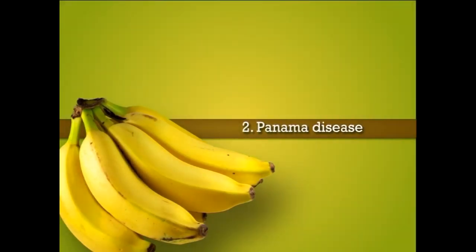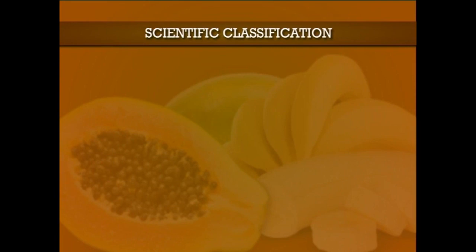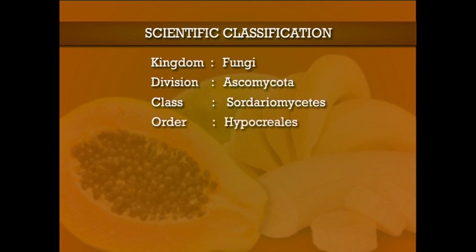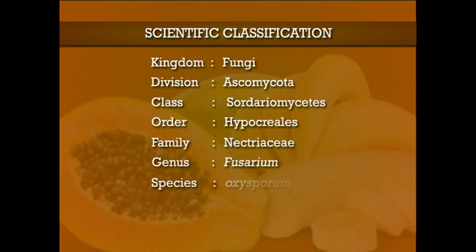The next disease is Panama disease. It is a vascular pathogen that blocks the vascular system and causes wilting. Scientific classification: Kingdom Fungi, division Ascomycota, class Sordariomycetes, order Hypocreales, family Nectriaceae, genus Fusarium, species oxysporum.